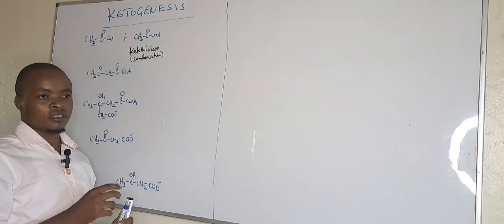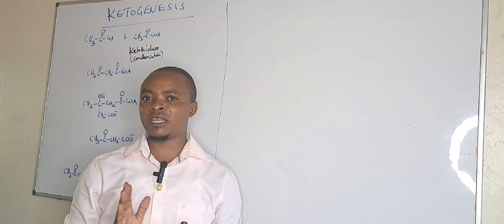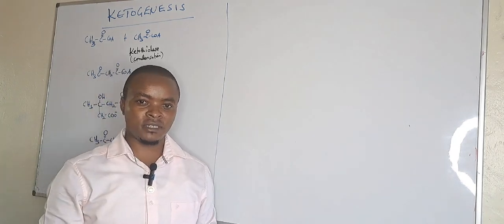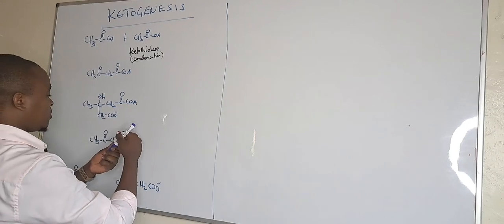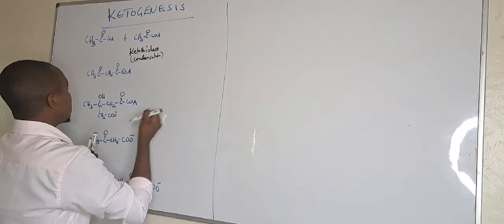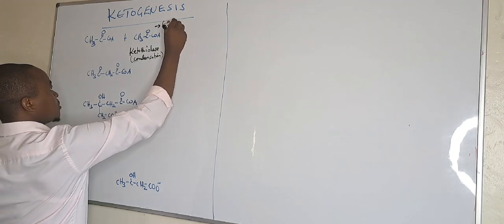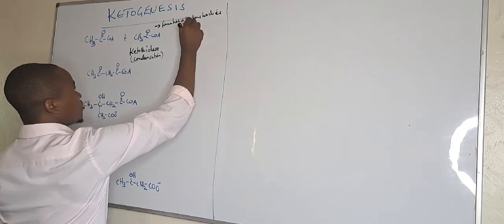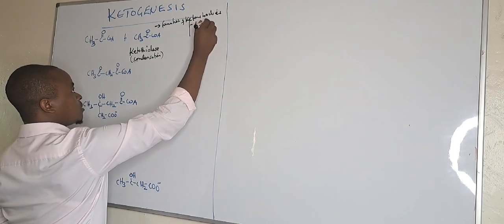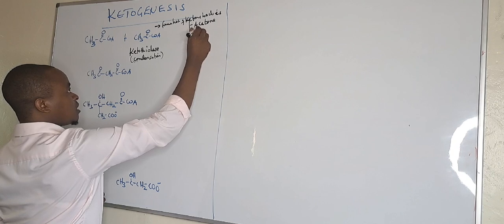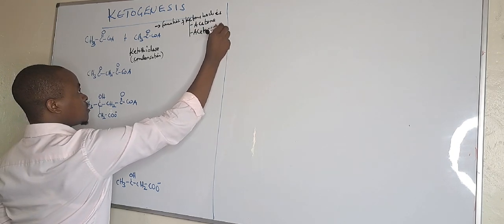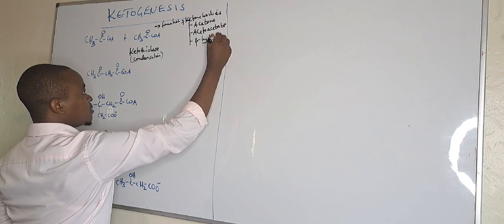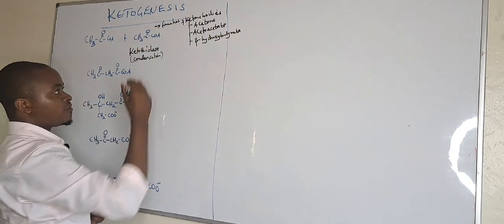Ketogenesis is made of two words: 'keto' from the word ketones, and 'genesis' meaning formation. So ketogenesis is the formation of ketone bodies. And these ketone bodies, they are always three: we have acetone, which is volatile; we have acetoacetate; and we have beta-hydroxybutyrate. These are the three ketone bodies.